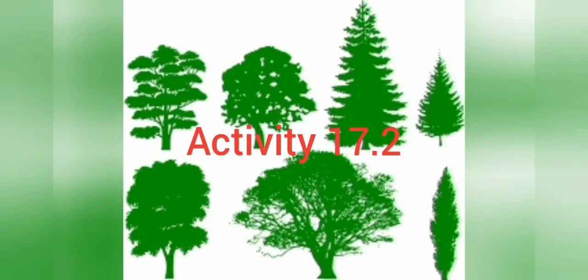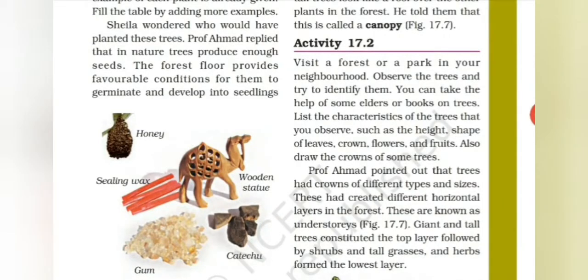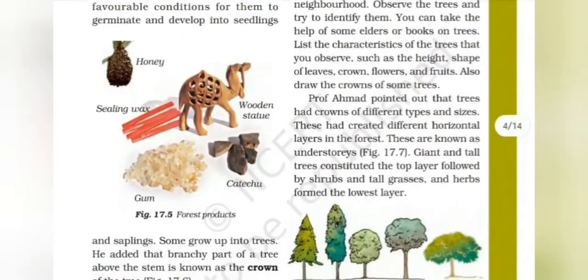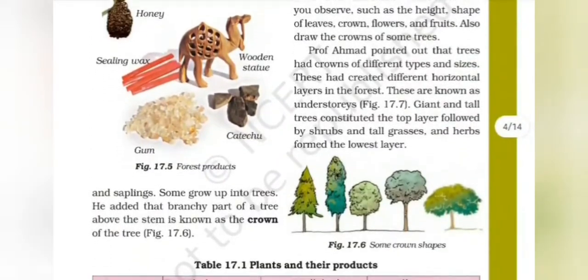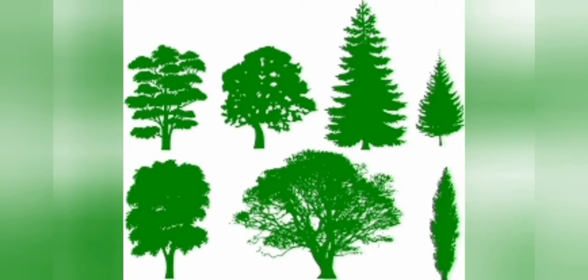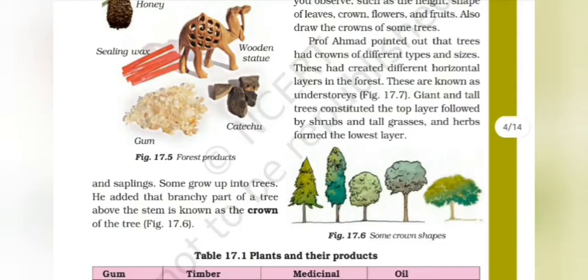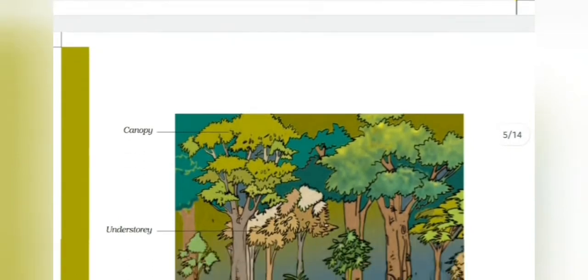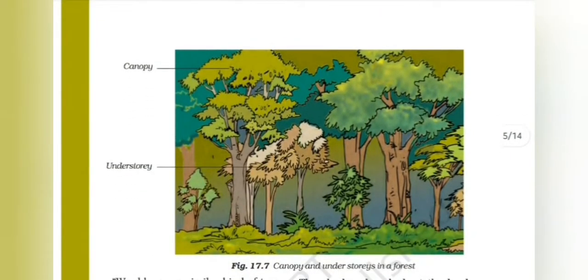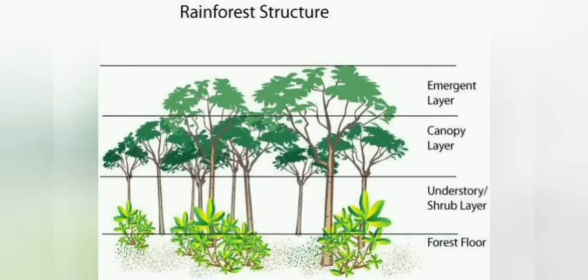One more activity is given, 17.2. Here children have taken the view of different crown shapes. Professor Ahmad pointed out that the trees had crowns of different types and sizes. The trees had created different horizontal layers in the forest, known as understory. Mainly two layers are there: overstory and understory.